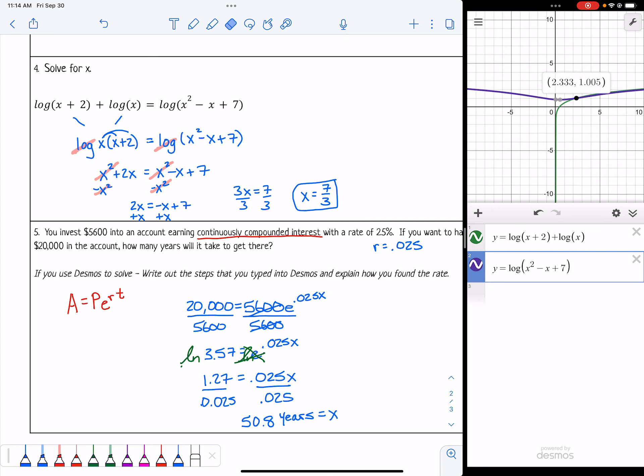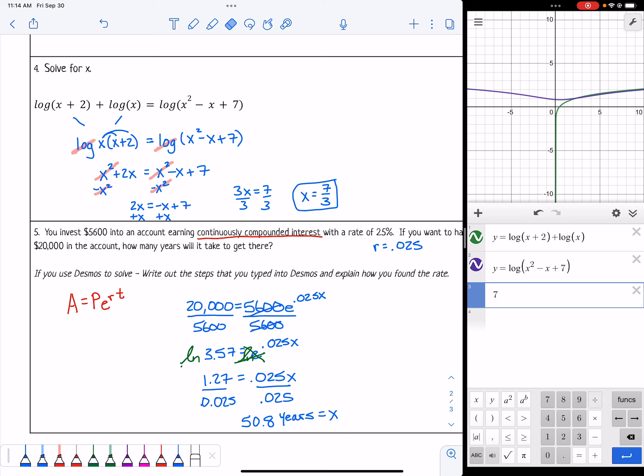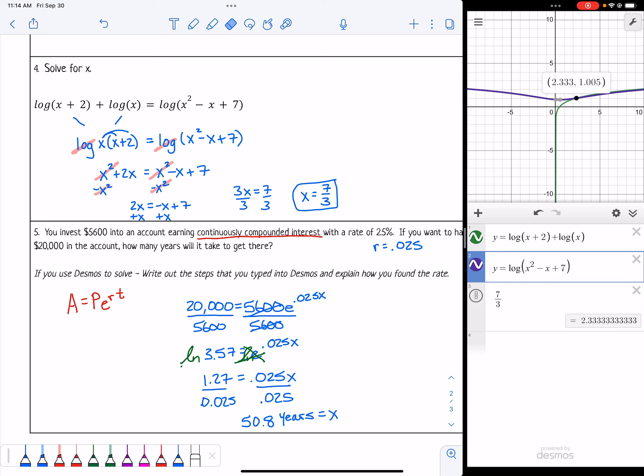Then you can find where those touch. Notice 2.33 is the same answer as 7 thirds, because if we put 7 thirds back as a decimal, that's what we would get. That is it for practice quiz 8.